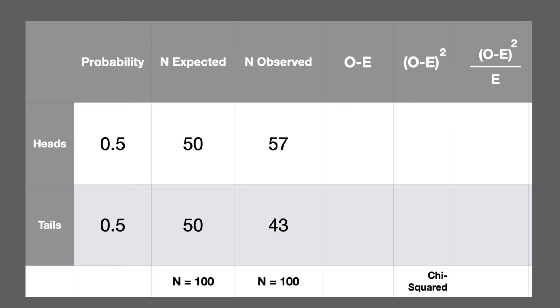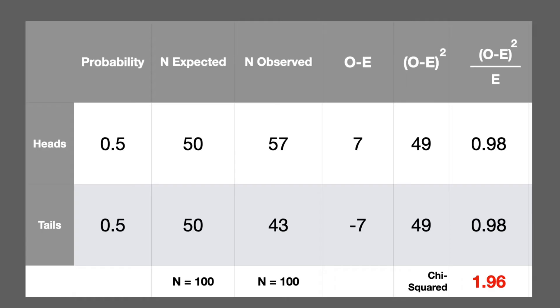Before you start the chi-square calculations, you usually establish a null and alternate hypothesis, but we'll put that on hold for now to avoid additional confusion. Let's go to our table first and fill out these values. The observed minus expected: 57 minus 50 gives us 7 for the first row, and 43 minus 50 gives us negative 7 for the second row. Squared, those values are 49 in both rows. Divided by expected — which is 50 for both heads and tails — gives us 0.98 in both rows. The sigma symbol tells us to sum everything up, giving us a chi-squared value of 1.96.